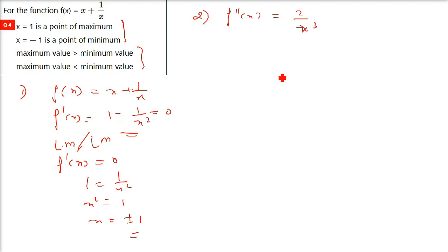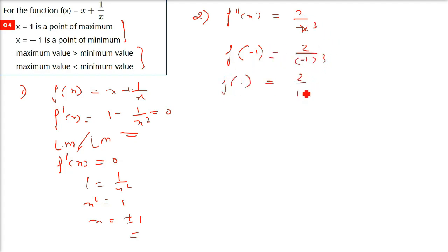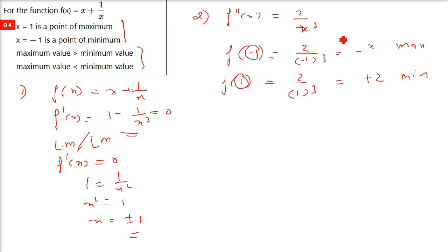Since the question doesn't specify whether x is positive or negative, we take both values: x equals plus 1 and x equals minus 1. The double differentiation of 1 minus 1 by x squared gives 2 by x cubed. We need to check both values separately: f''(−1) equals 2 by (−1) cubed, and f''(1) equals 2 by 1 cubed.